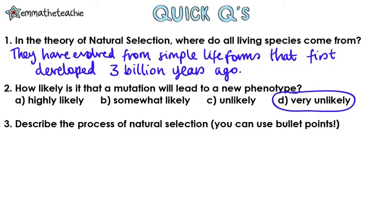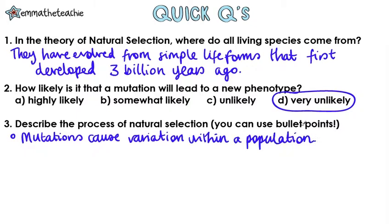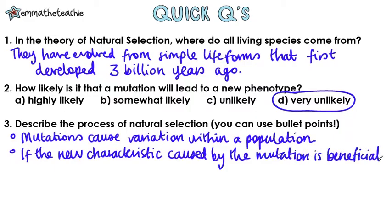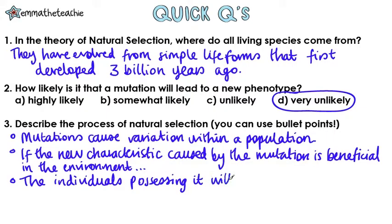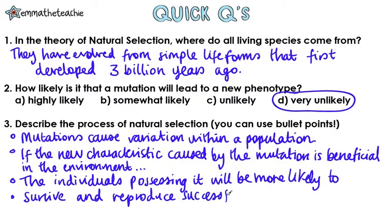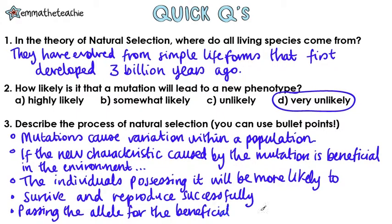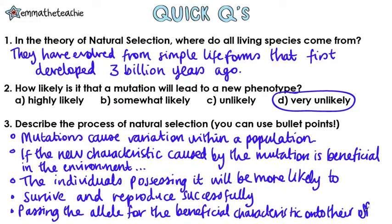And three: describe the process of natural selection. First of all, mutations cause variation within a population. If the new characteristic caused by the mutation is beneficial in the environment, then the individuals that possess it will be more likely to both survive and reproduce successfully. When they do this, they pass on the alleles for the beneficial characteristic to their offspring. How did you do?